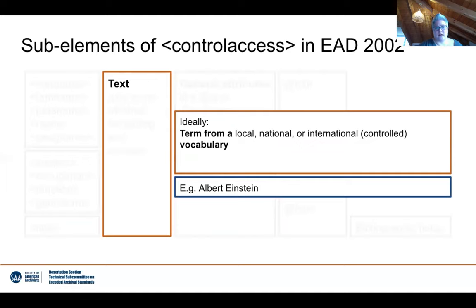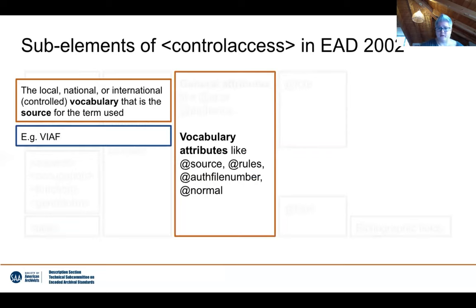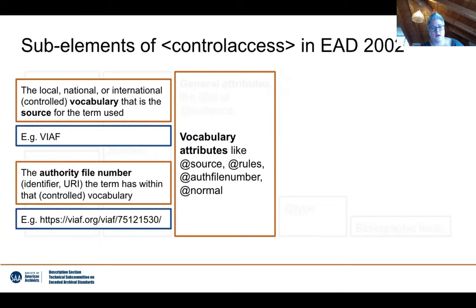Starting with the text that can be included in the control access sub-elements — ideally that would be a term from either a local, national, or international controlled vocabulary, for example the name Albert Einstein. Looking at the vocabulary attributes available with all those sub-elements, we can start with the attribute source, giving the vocabulary that is the source of the term used. For example, if we have used Albert Einstein from the Virtual International Authority File, we would include the abbreviation VIAF in the source attribute. There is also the auth file number — the authority file number — which is the identifier or URI the term has within the controlled vocabulary.